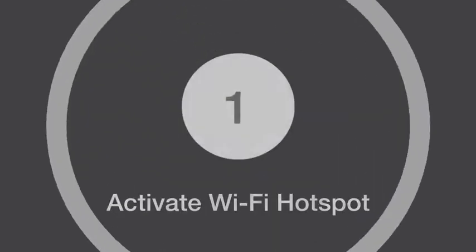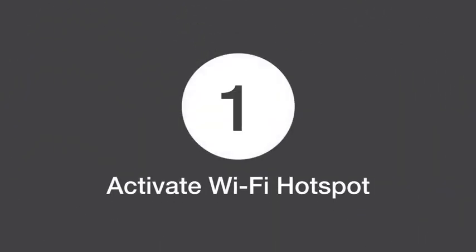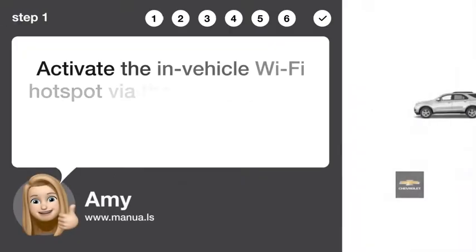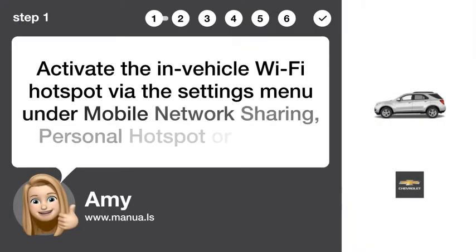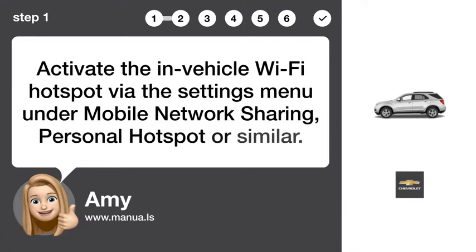Step 1: Activate Wi-Fi Hotspot. Activate the in-vehicle Wi-Fi Hotspot via the settings menu under Mobile Network Sharing, Personal Hotspot, or similar.